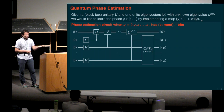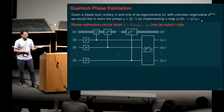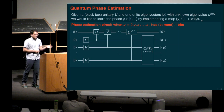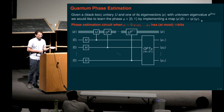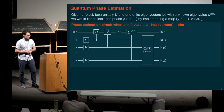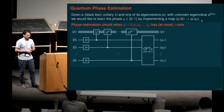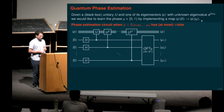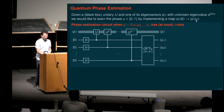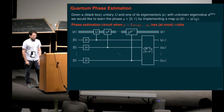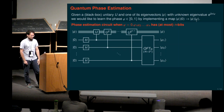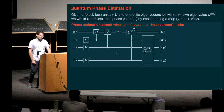Here is the quantum phase estimation circuit, which works very nicely when we have that this unknown phase is actually a number which can be represented in binary on the n bits we have available. It's clear that if it's some irrational number then we cannot exactly represent it, but if we are fortunate enough that it's an n-bit binary number, then the following circuit works.